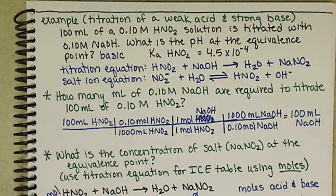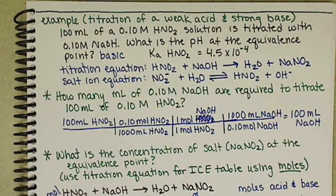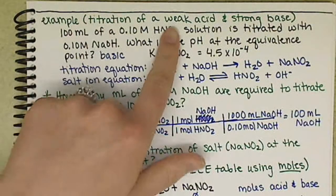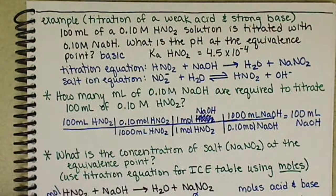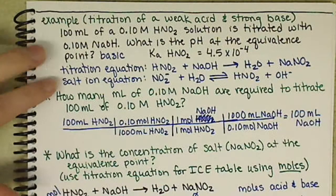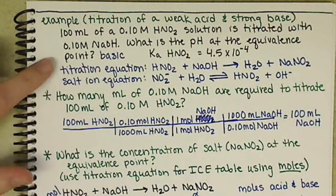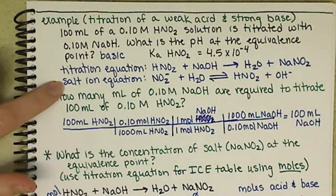Alright, so we want to finish up this example from today's lecture, talking about the titration of a weak acid with a strong base. So we have two equations, remember, that we're working with: titration equation and the salt ion equation.